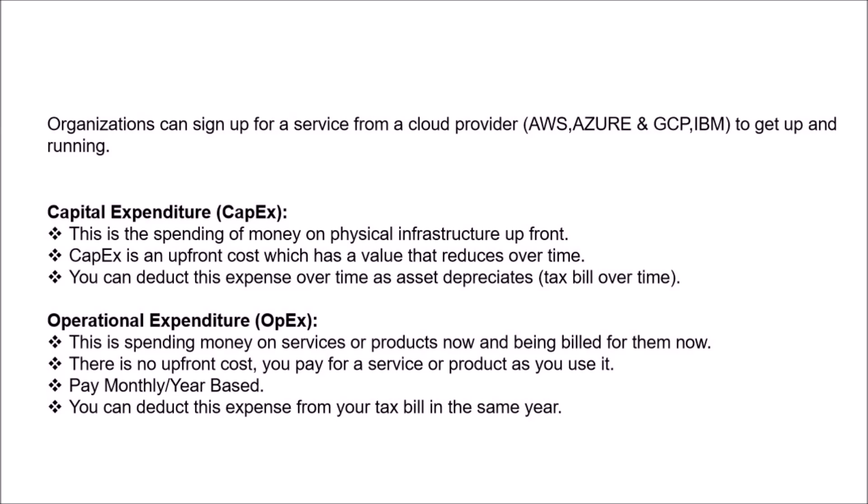Now let's see the two terms: capital expenditure and operational expenditure. These are very important in Azure or any cloud service provider. Organizations can sign up for services from cloud providers like AWS, Azure, GCP, or IBM. Capital expenditure is where you spend money on a physical infrastructure upfront — you buy physical infrastructure and use it. It is an upfront cost which has a value that reduces over time.